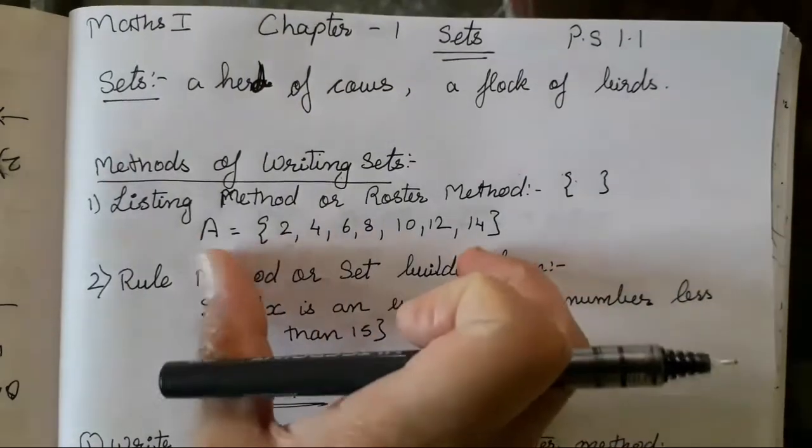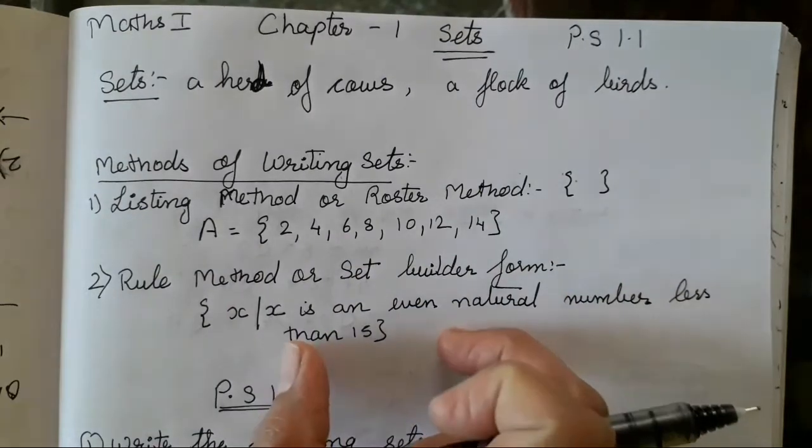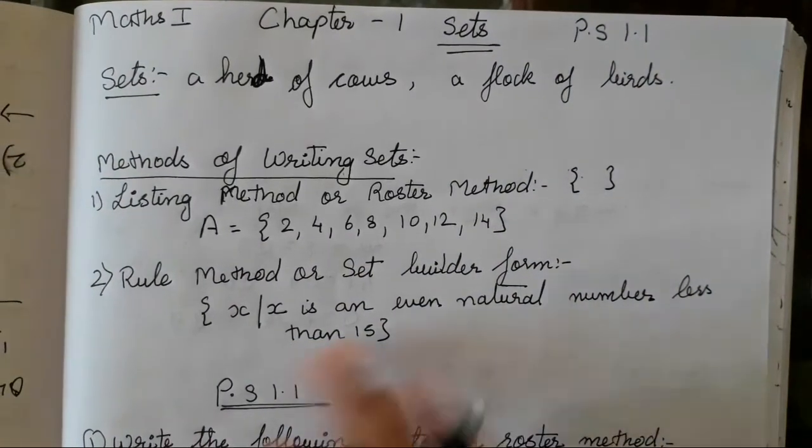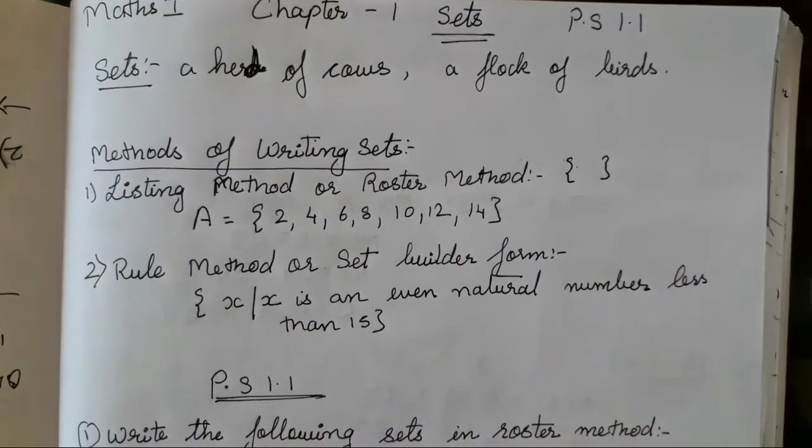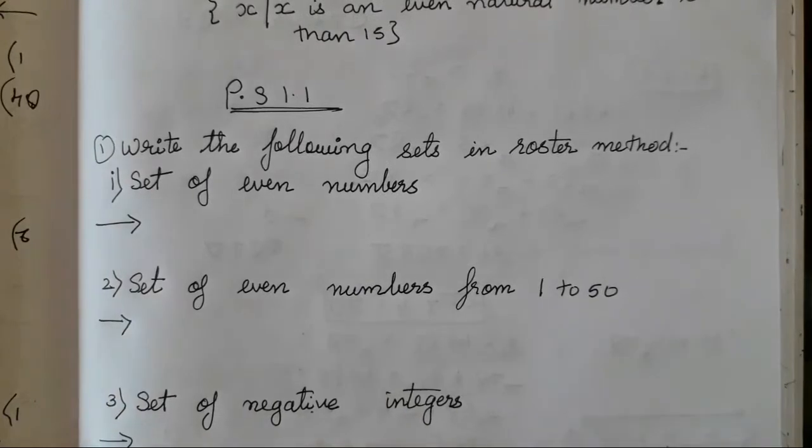So you all can say this is the listing means we have to show it in detail and rule method means we are creating a question type. So I hope these two points are clear to everyone. Now let's solve the exercise so that it will be more clear to y'all.